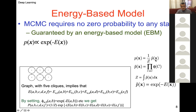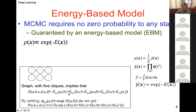The joint probability distribution involves the partition function as well as the energies. Z is stated in terms of the energies. We are using this energy formulation to proceed in the sampling explanation.